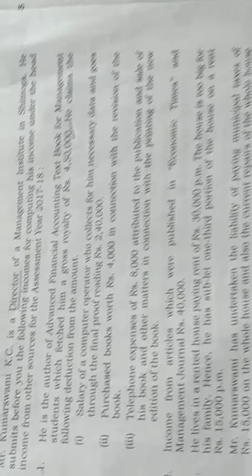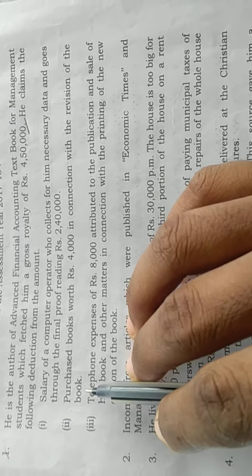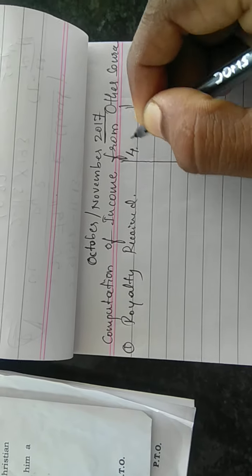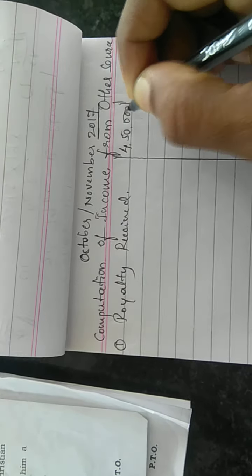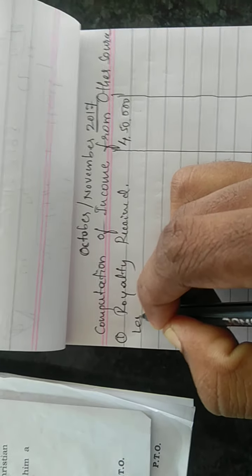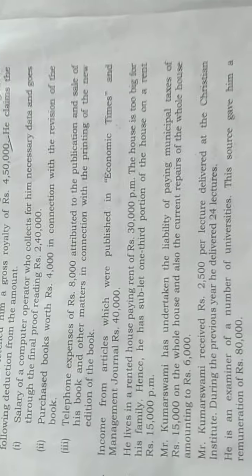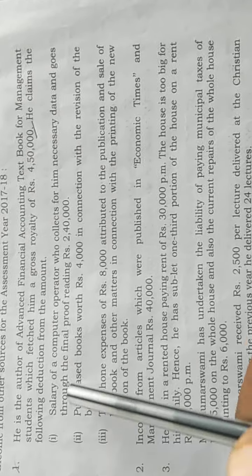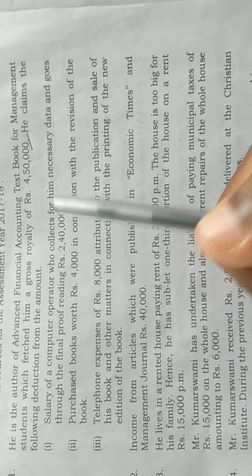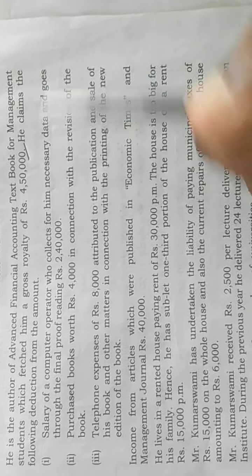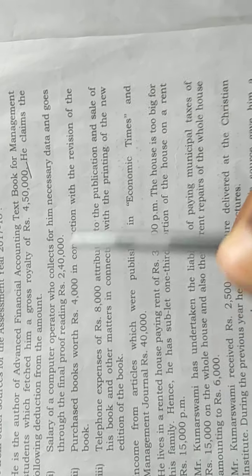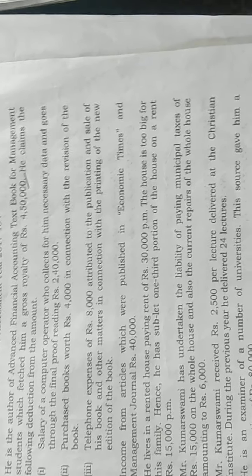Some expenditures are given in the problem related to that royalty. Royalty received is four lakh fifty thousand. Less the expenditure related to the royalty — first one: salary of a computer operator who collects necessary data and goes through the final proofreading, rupees two lakh forty thousand.